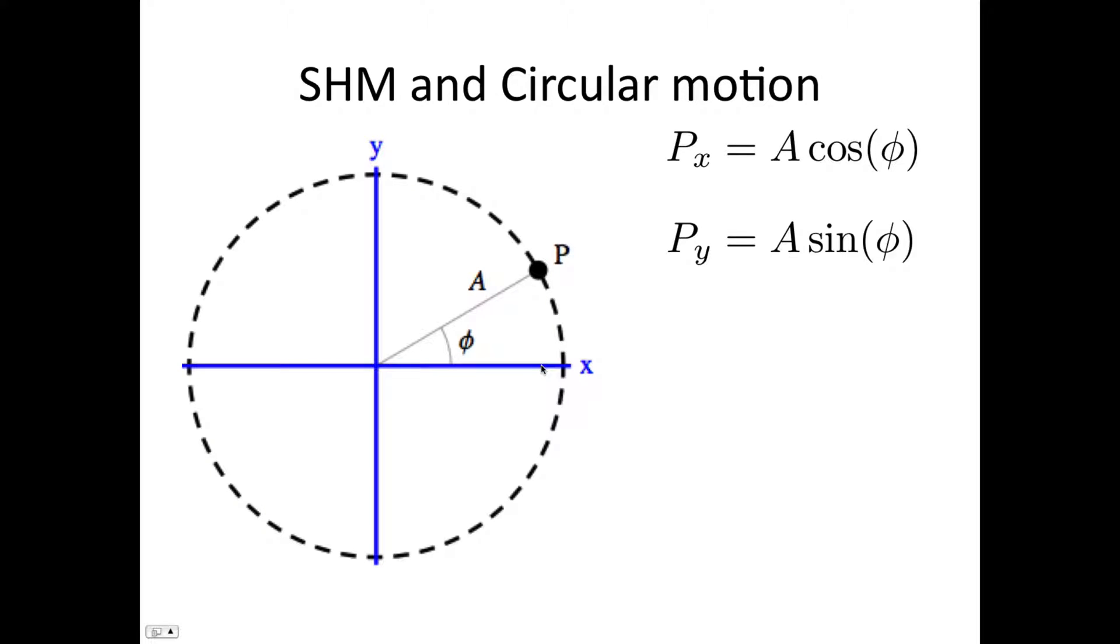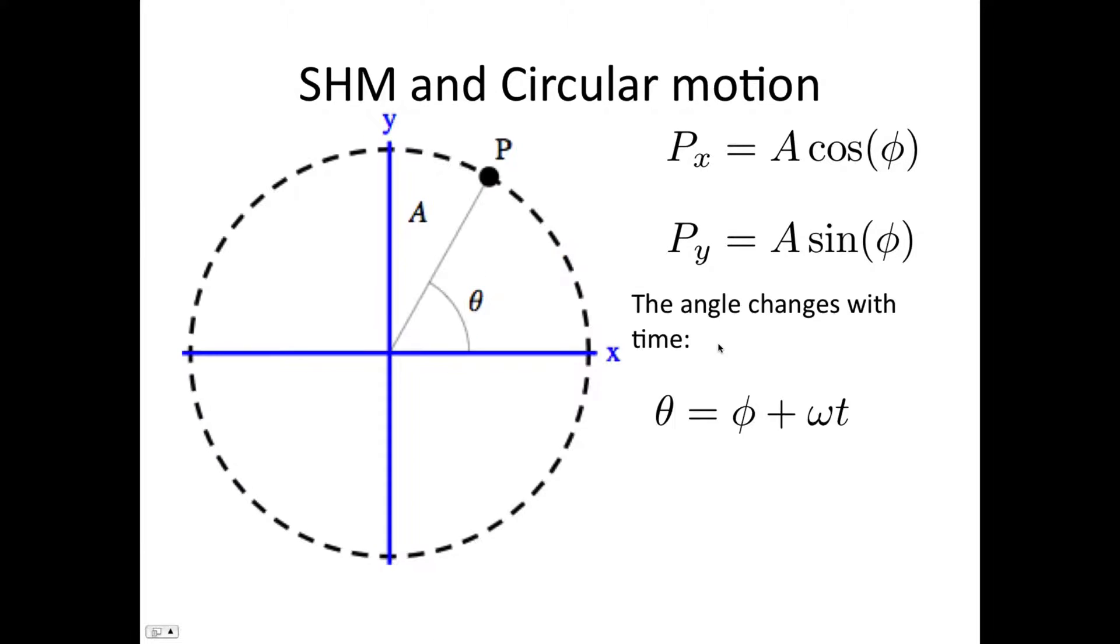Now we want to consider the case where phi is actually changing with time. So phi is our initial angle. If we want P to undergo circular motion, then it's going to travel around this circle at a constant rate. And its angle will be given by theta is equal to phi, the initial angle, plus omega t.